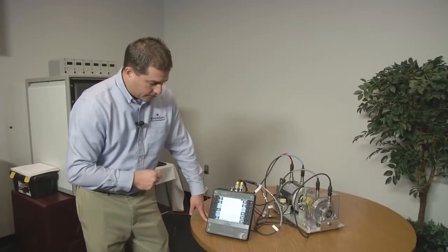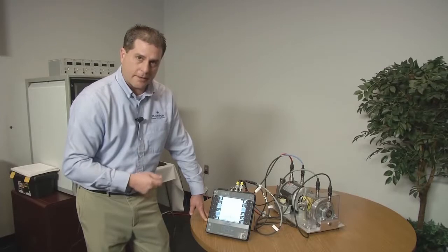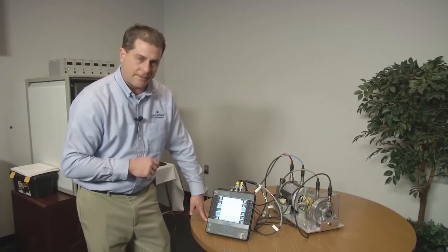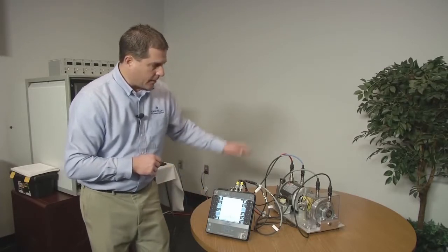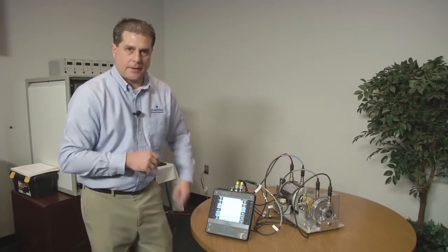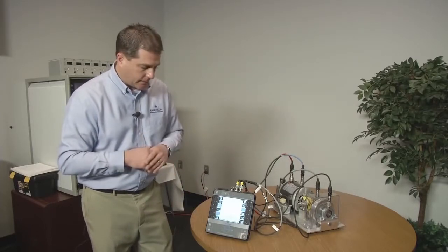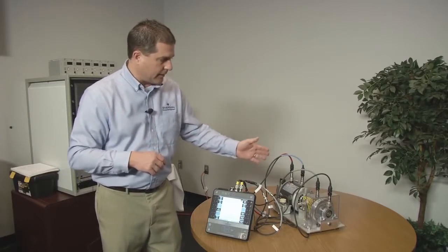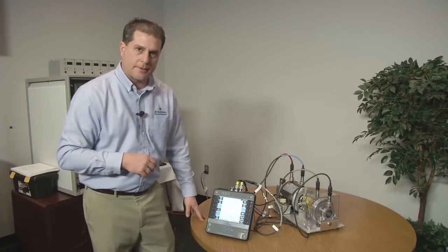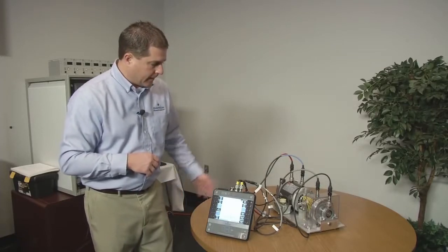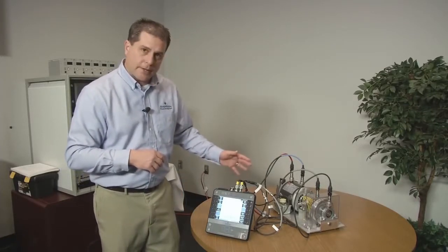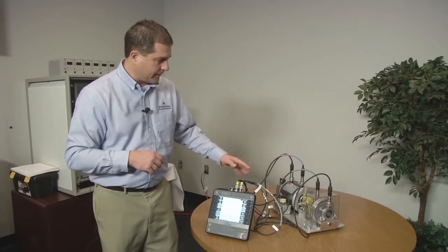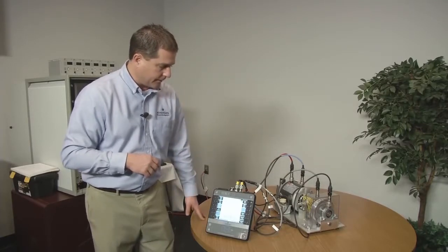Now what I can do to further verify that I think I've got a misalignment condition is cross channel phase across a coupling is a good indication, a good test to run to show misalignment. If it really is a misalignment condition, then I should see 180 degrees phase shift across this coupling. And so this is where the four channel CSI 2140 comes in handy. You can see I've got four sensors on the setup.